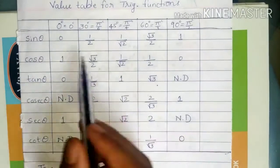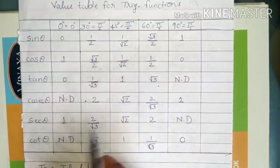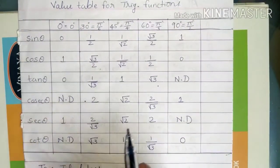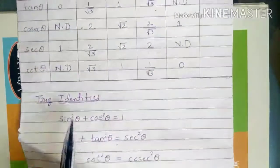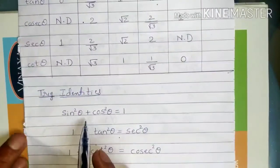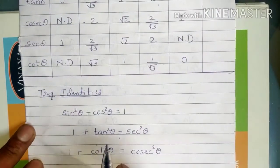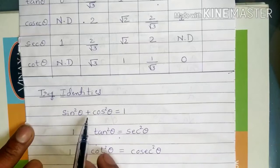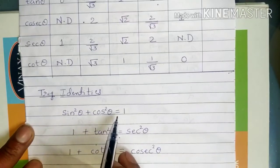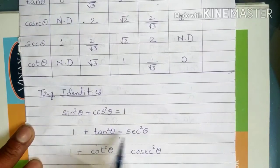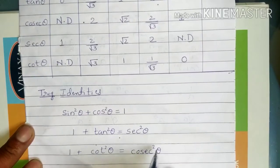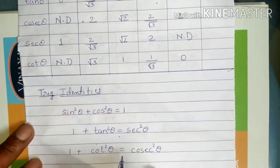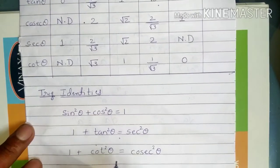Also, these values in the value table, which you have learnt in 10th standard, and these trigonometric identities: sin squared theta plus cos squared theta equals 1; 1 plus tan squared theta equals sec squared theta; 1 plus cot squared theta equals cosec squared theta. These are the three trigonometric identities.